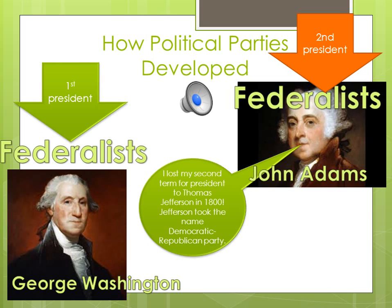The Federalist Party lost most of its members. The Democratic-Republican Party was changing and began to split into two different parts — it's like a crazy tree branching off. One part was led by Andrew Jackson.